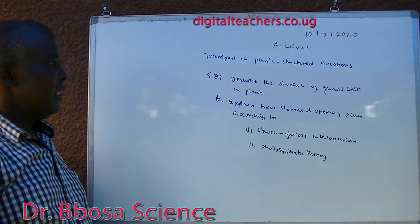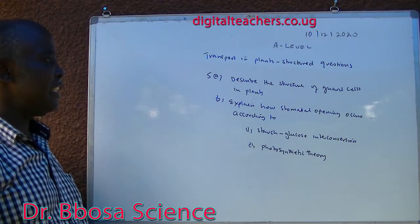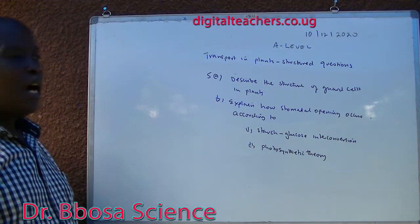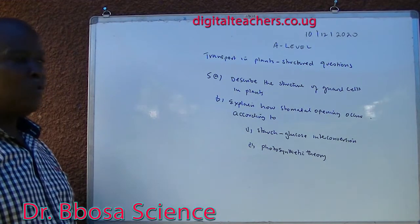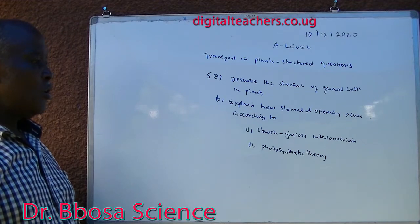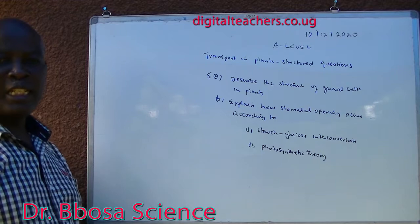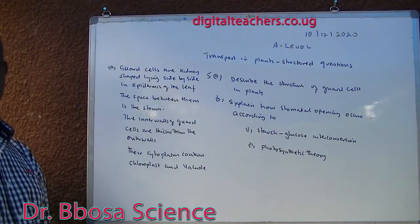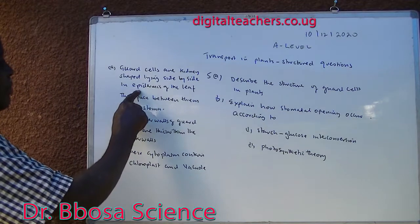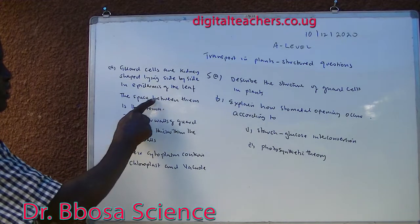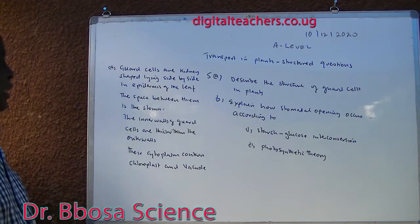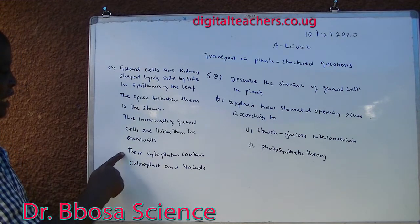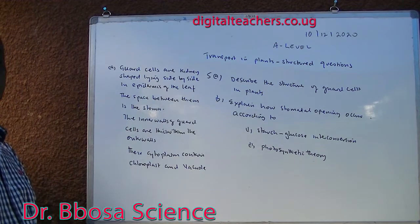Number five A: describe the structure of guard cells in a plant. The guard cells are kidney-shaped, lying side by side in the epidermis of the leaf. The space between them is the stoma. The inner wall of the guard cells is thicker than the outer walls. The cytoplasm contains chloroplasts and a vacuole.